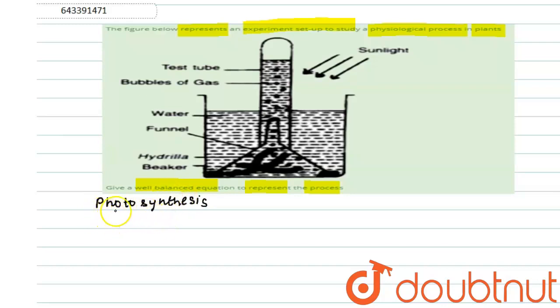photosynthesis evolves oxygen as a byproduct. Let us see the equation. First, CO2 reacts with water in the presence of sunlight. Let me write: